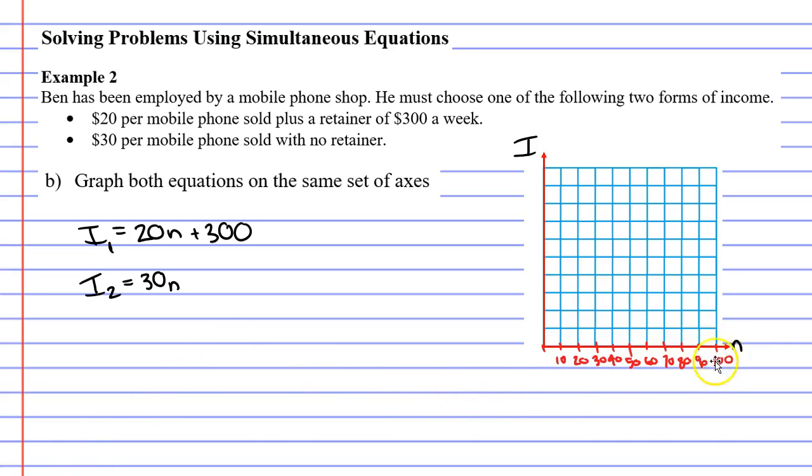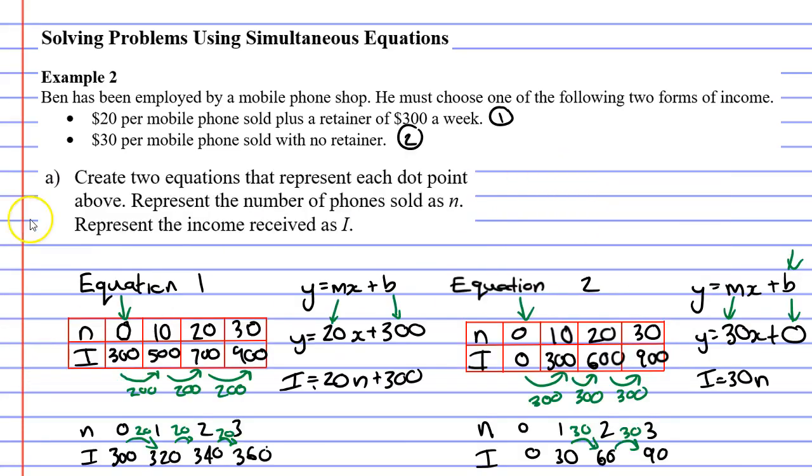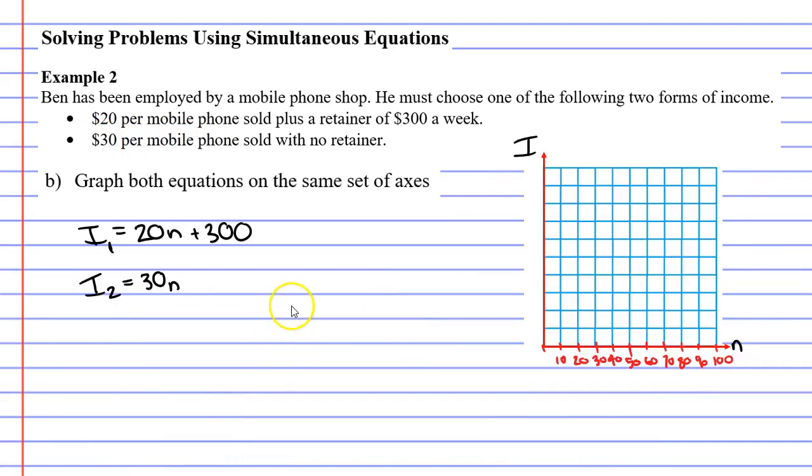I can see that n gets as high as 100 here. And I've got to think to myself, how high is my income going to go? So I reckon the second dot point where it was $30 per mobile phone, if I sold 100 phones, that would go to $3,000. And I think that's going to be the highest I'm going to get. What I reckon I'll do is I should go up by $300 each time.